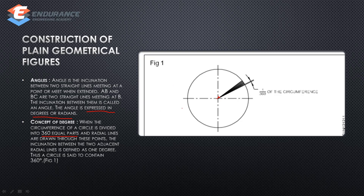If you divide a circle, it is equal to 360 degrees. The inclination between two adjacent radial lines is defined as 1 degree. If you add two radial lines, the angle between them is equal to 1 degree. The full circle is equal to 360 degrees.